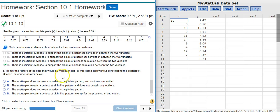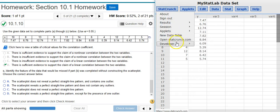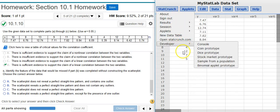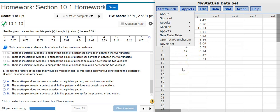Now Part C asks us to identify the feature of the data that would be missed if Part B was completed without constructing the scatter plot. Okay, let's go back and look at our scatter plot. And it looks like our scatter plot went away.